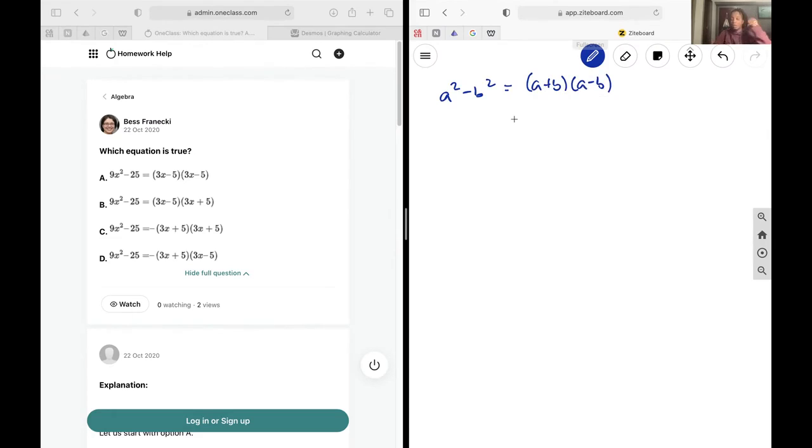So I need to figure out my a and b in the case of 9x squared minus 25. Just remember the exponent rule that if I have xy all to the power of a, it's the same thing as x to the power of a and y to the power of a.